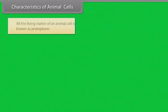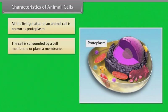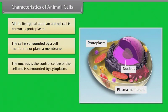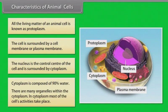Characteristics of animal cells: All the living matter of an animal cell is known as protoplasm. The cell is surrounded by a cell membrane or plasma membrane. The nucleus is the control center of the cell and is surrounded by cytoplasm. Cytoplasm is composed of 90% water, and there are many organelles within the cytoplasm where most of the cell's activities take place.